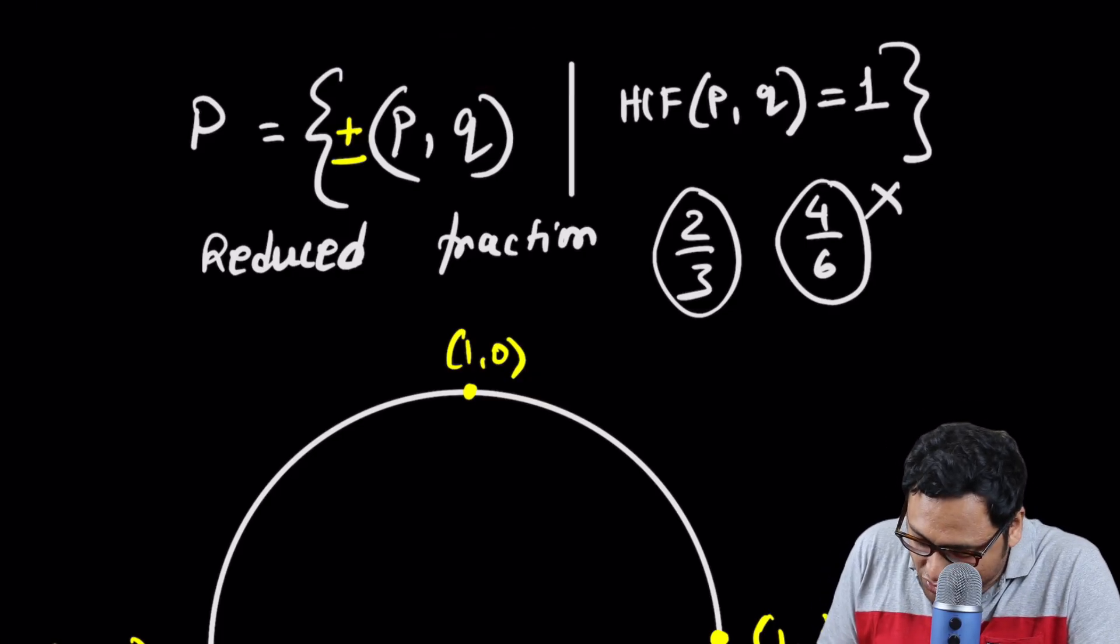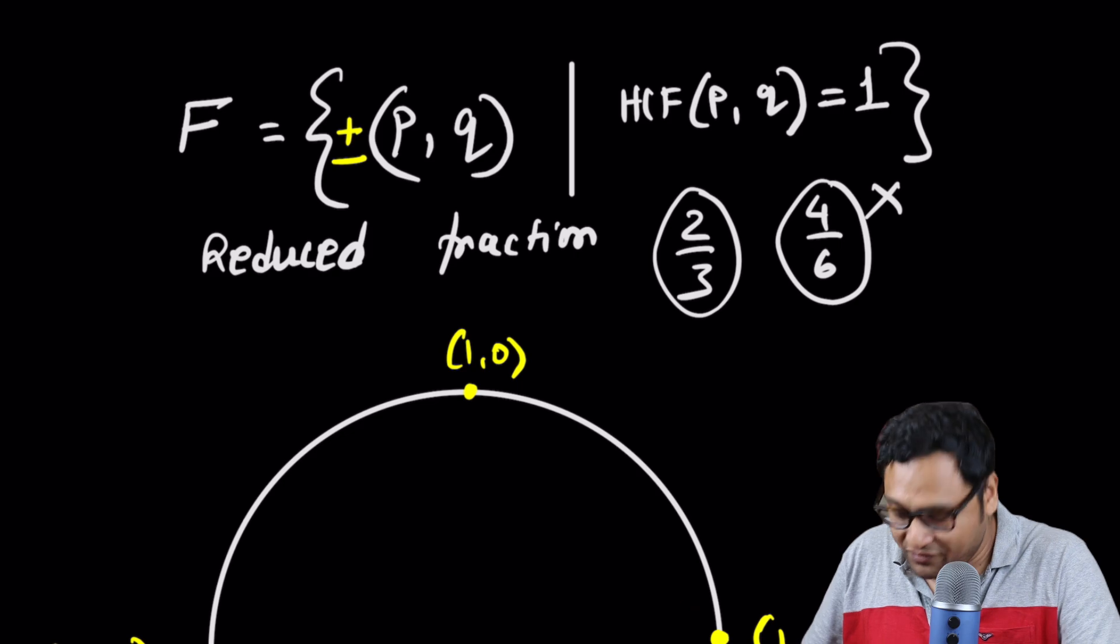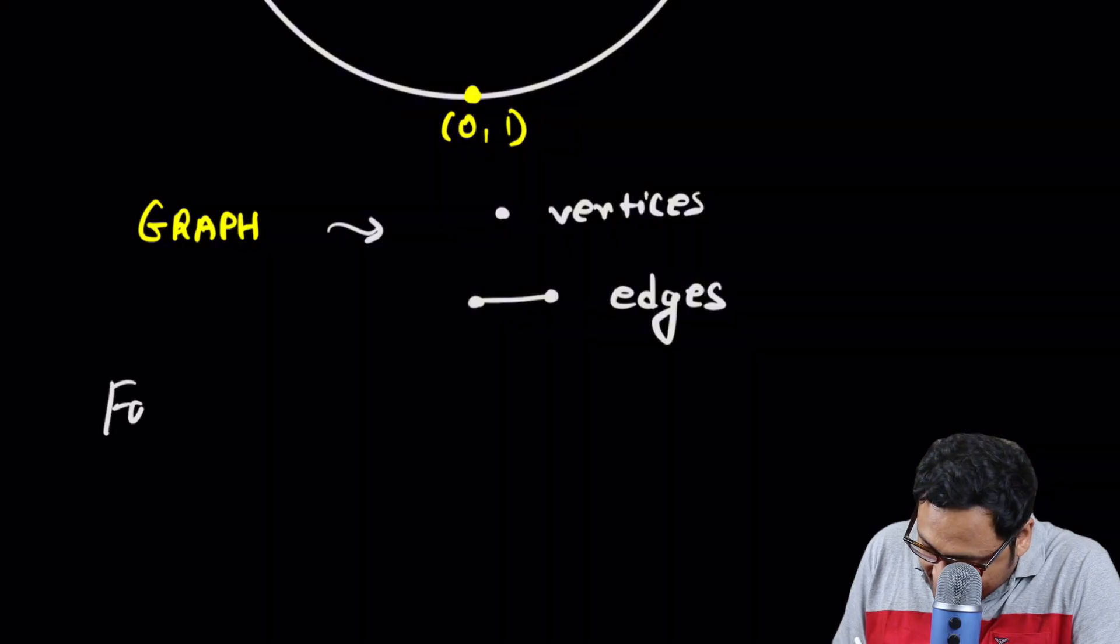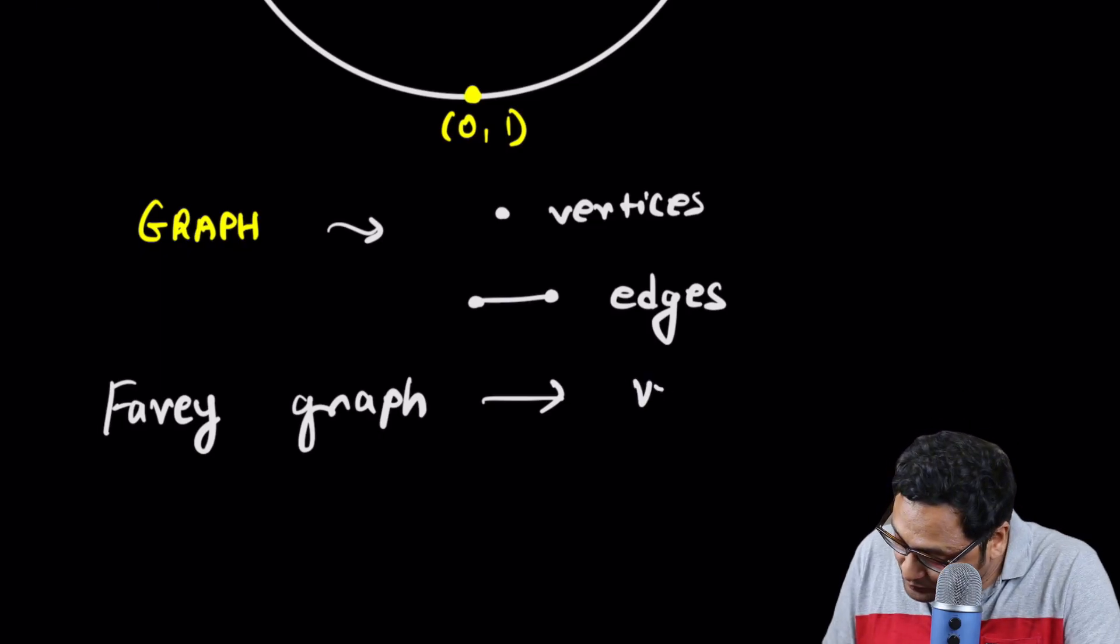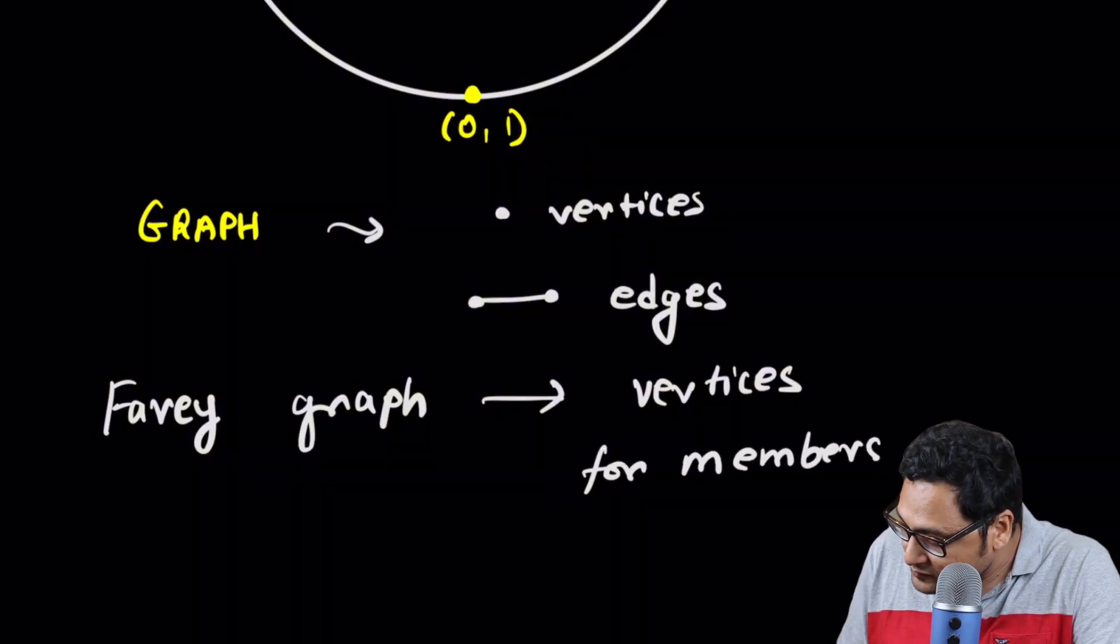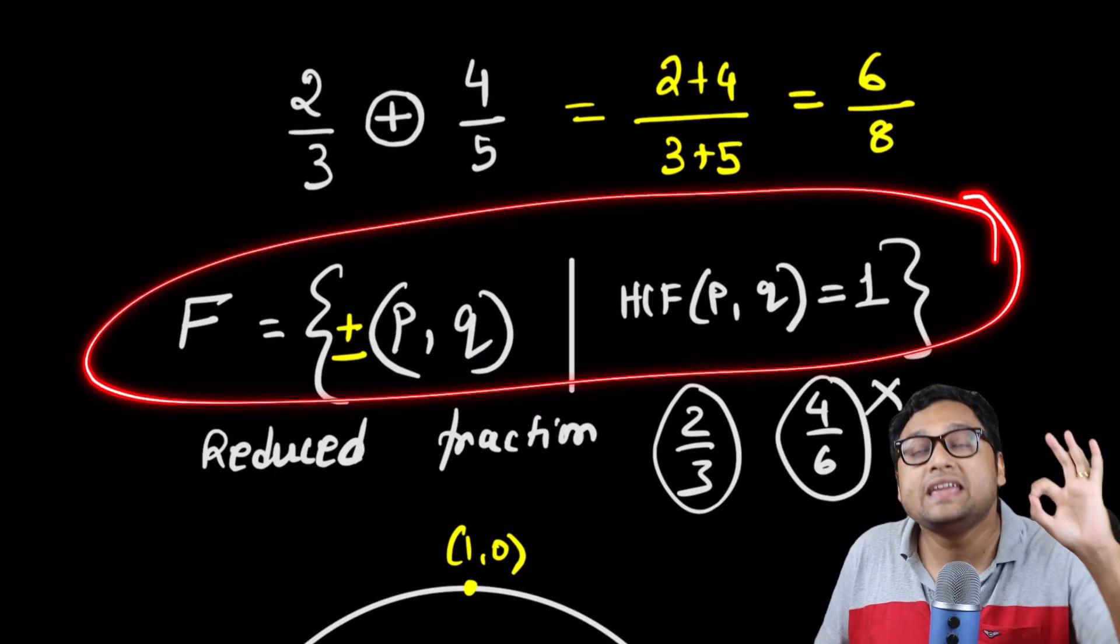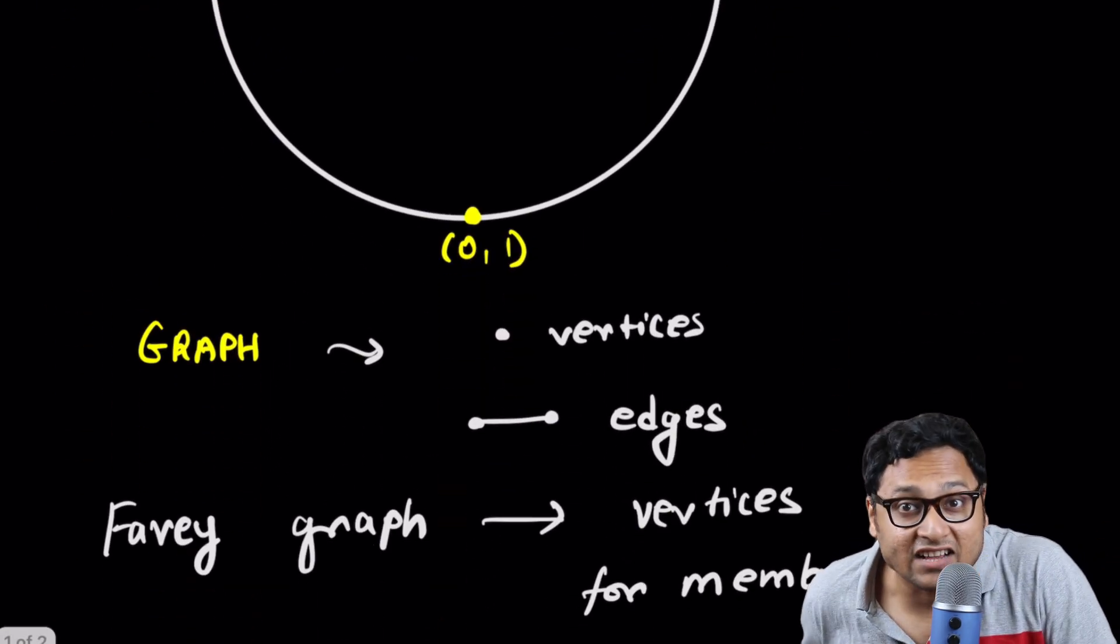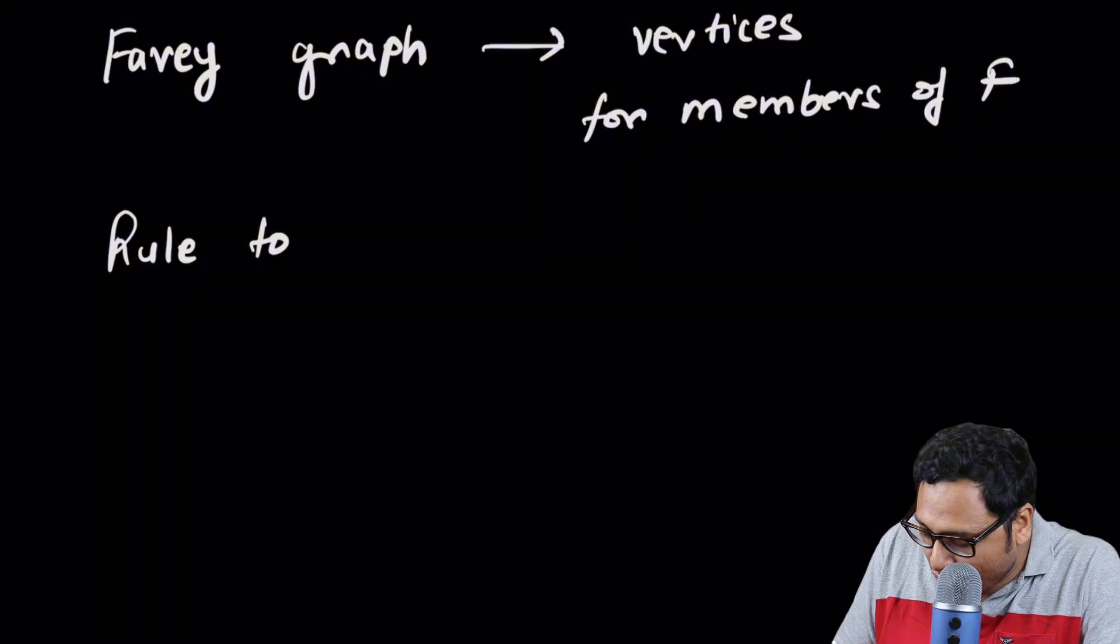How would you draw the vertices? Well, the vertices are members of this set P. In fact, just to make sure everything is starting with Farey, I will just put F here. So let's call this set F. Members of F, this special graph, sometimes known as the Farey graph. So this special graph has vertices for members of F. For each member of this set F, we have a vertex or a point.